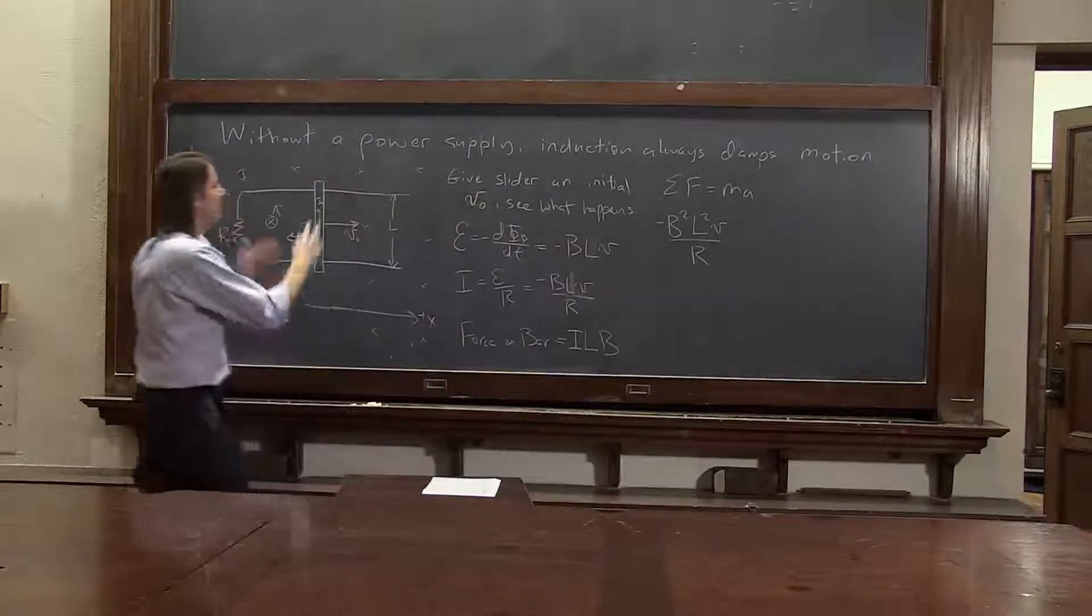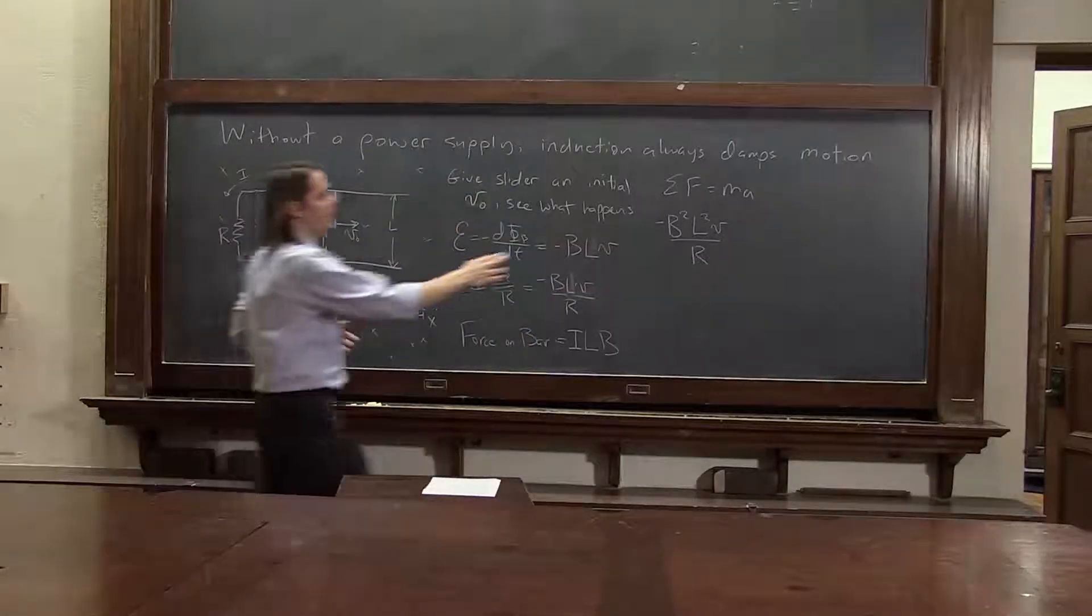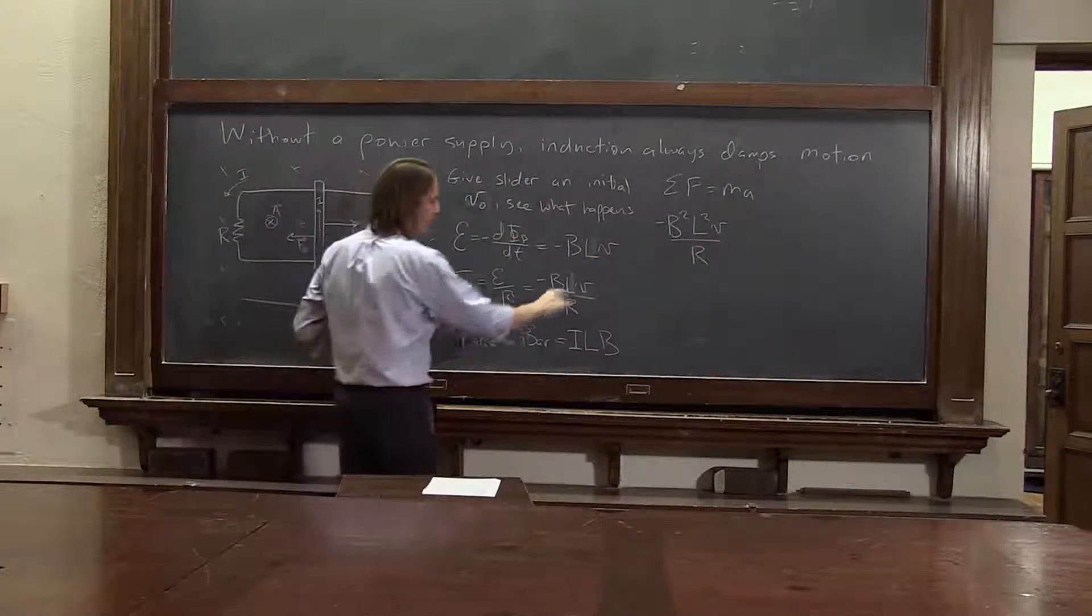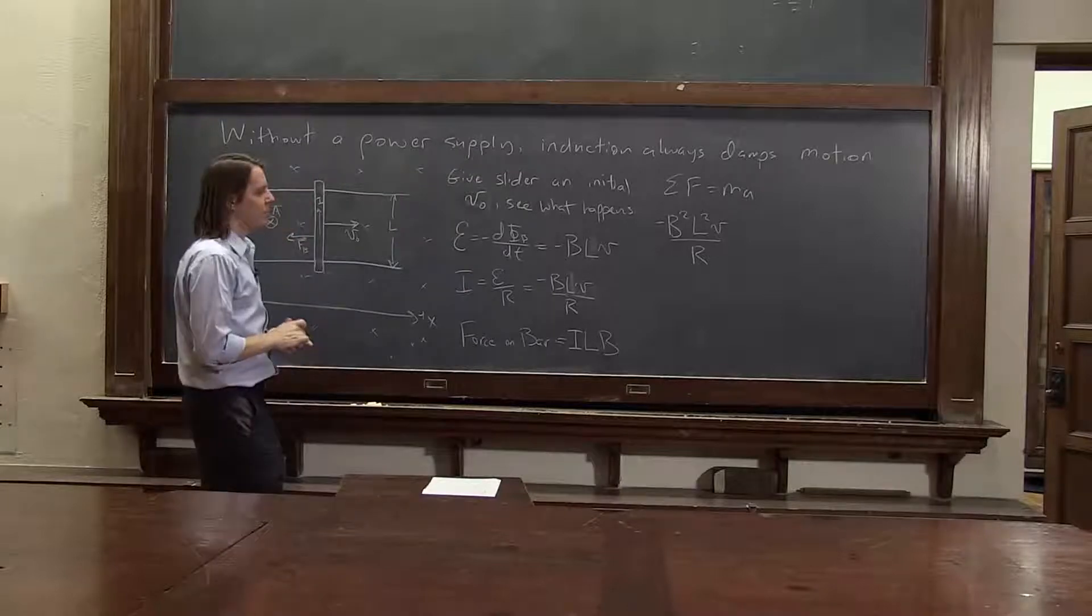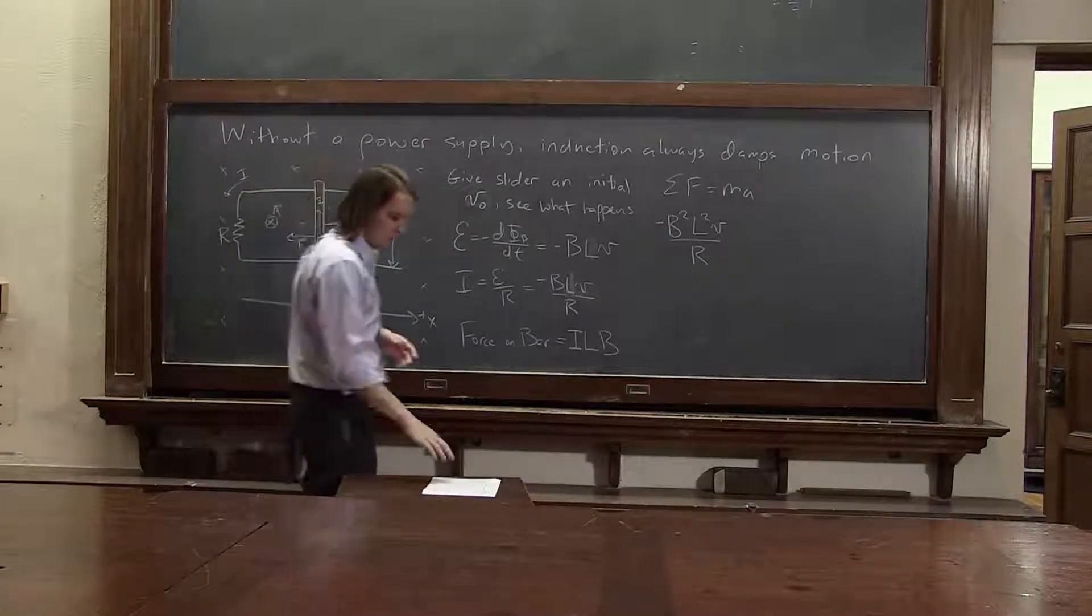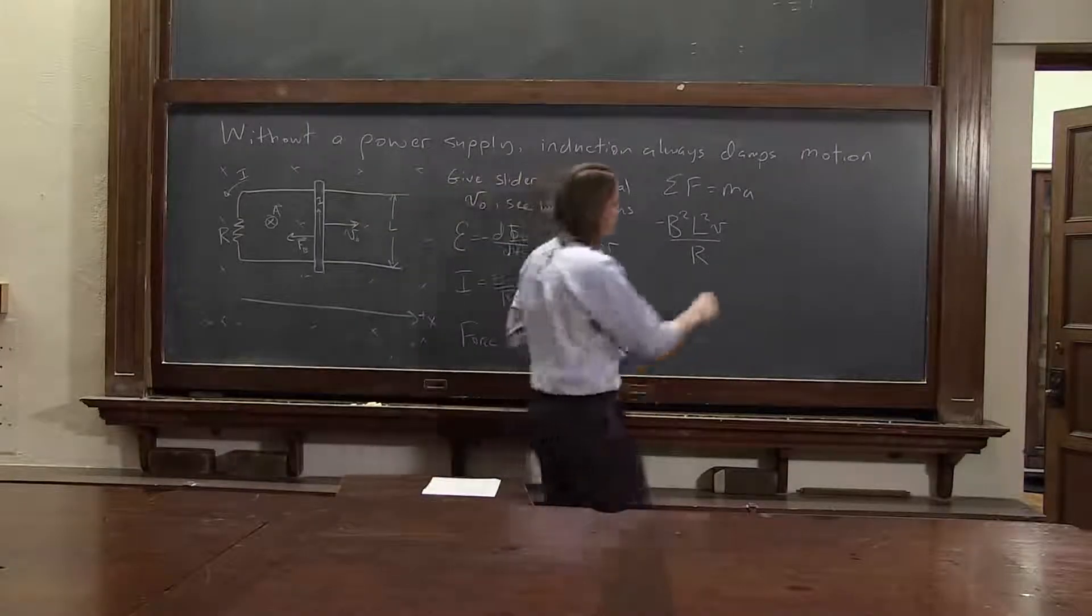And that is the instantaneous velocity, not just the initial velocity. Here, as this velocity changes, if it changes due to the kinematics, this will still be the current. That's velocity as a function of time. So minus b squared L squared V over R equals m times a.